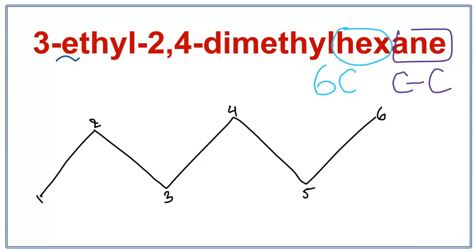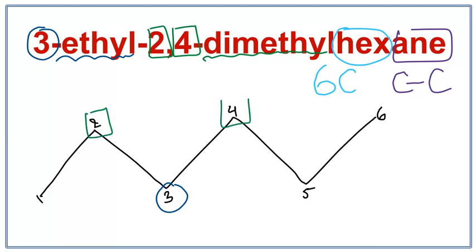Now we have an ethyl attached on the third carbon, which is right here. We have dimethyl on the second and on the fourth carbon. So on the second carbon here and on the fourth carbon.